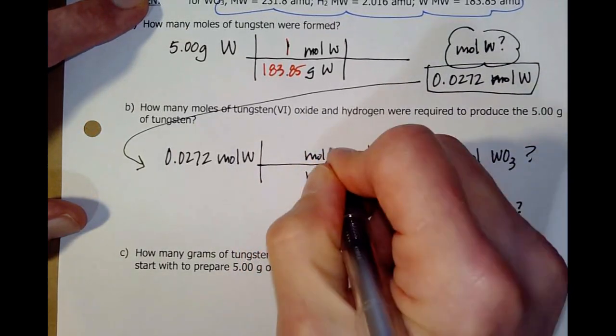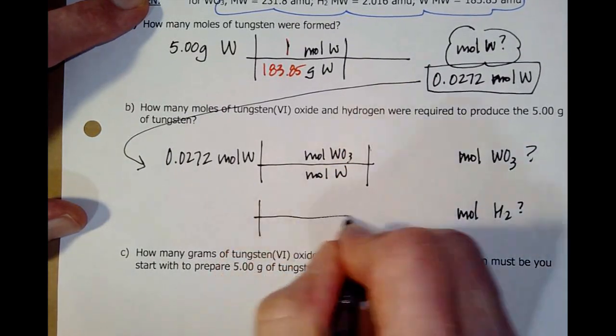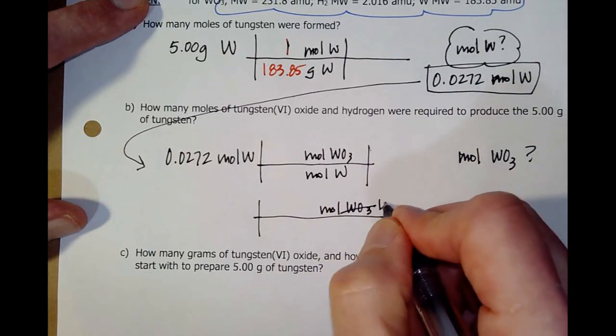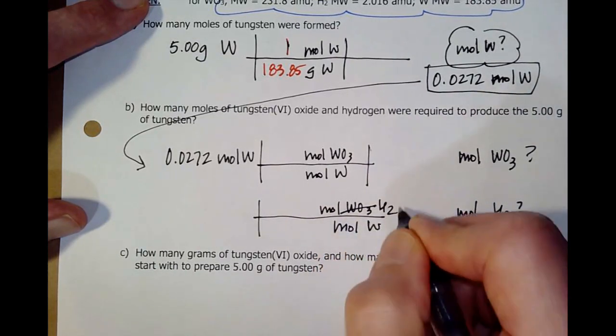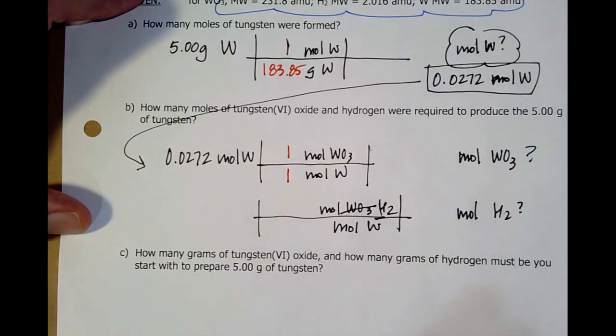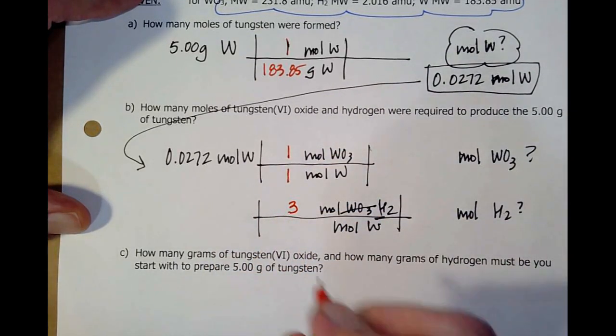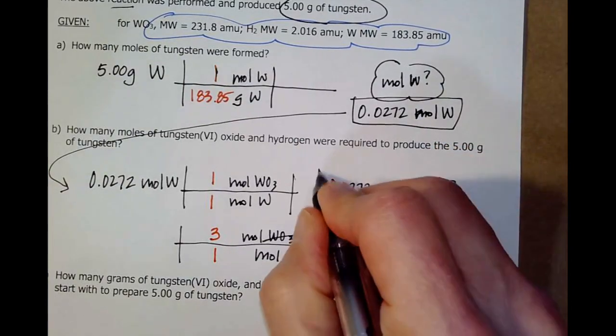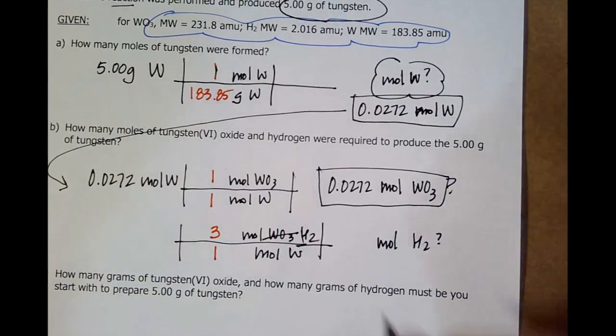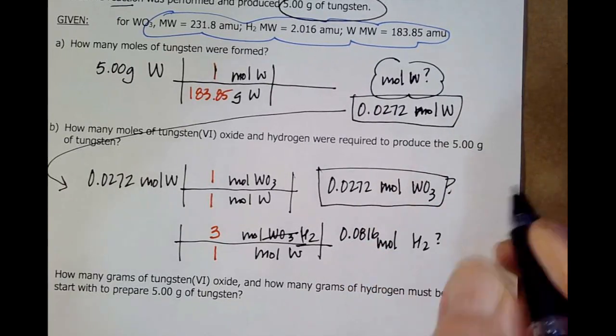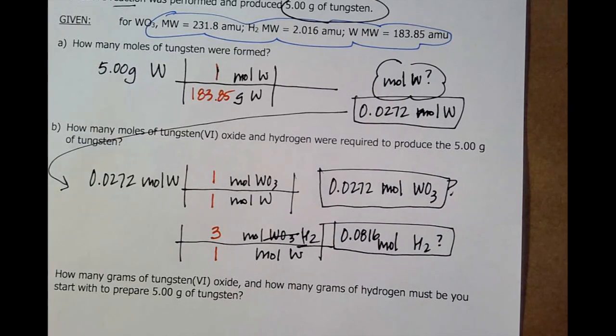Moles W, moles WO3. Moles W. I go back to the balanced chemical equation. One to one, that one's easy. Turns out three moles are required for every one mole of tungsten. So, I get 0.0272 moles of tungsten 6 oxide. I get 0.0816. And as always, if that number doesn't make sense, stop the video. Punch it on your calculator. Make sure you're like, oh yeah, that works.